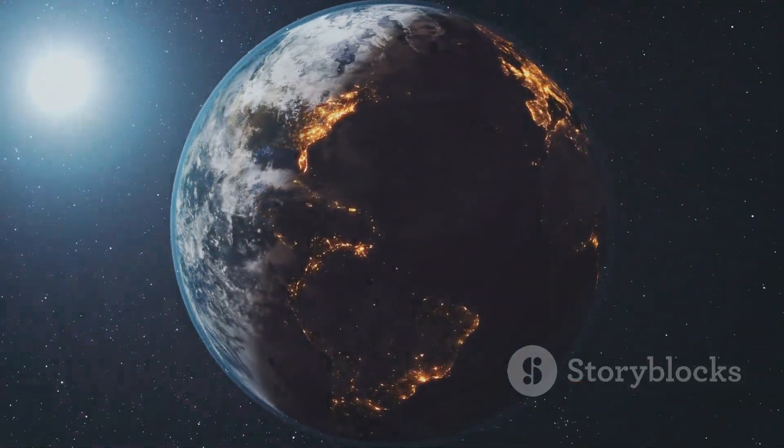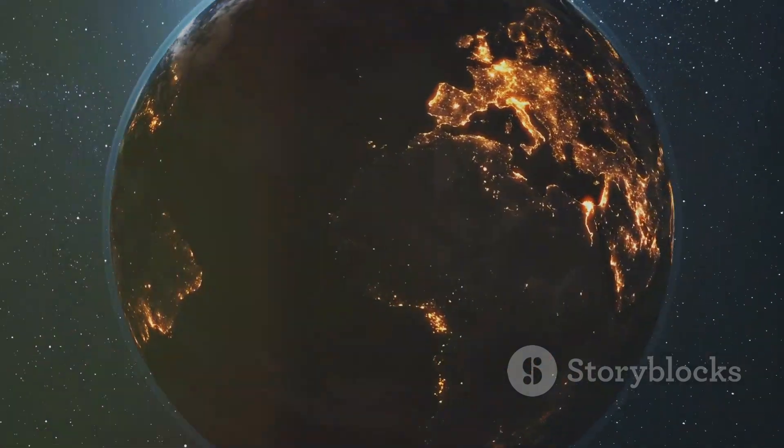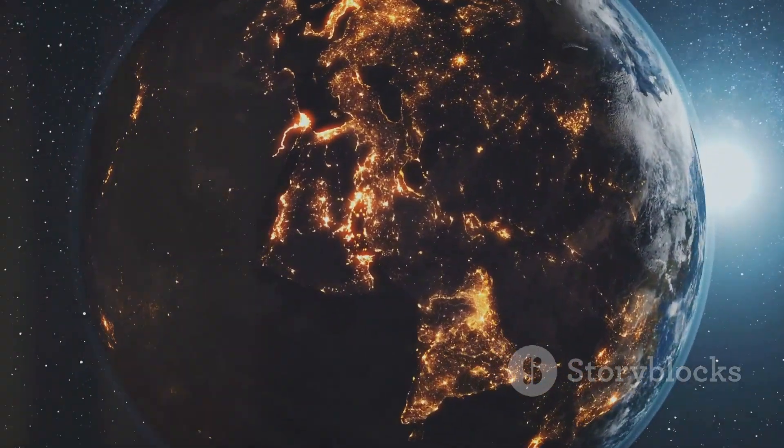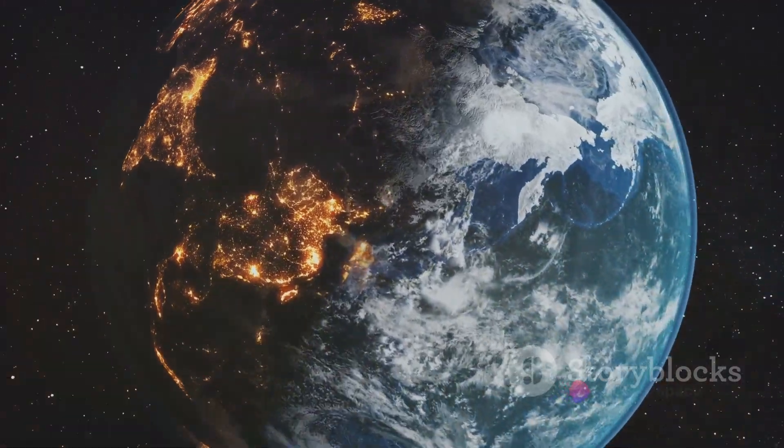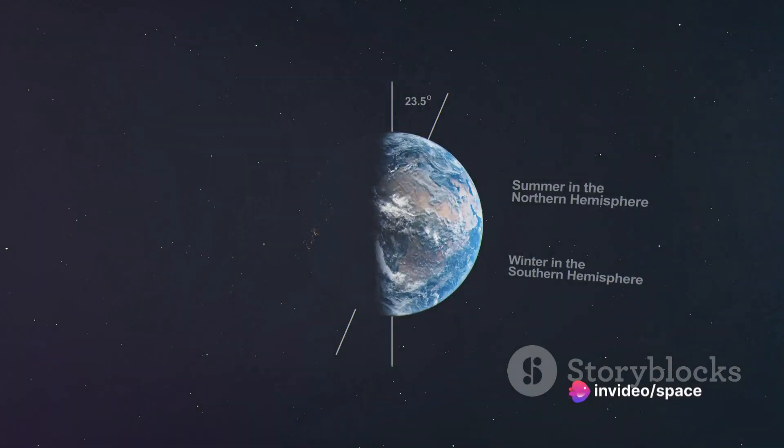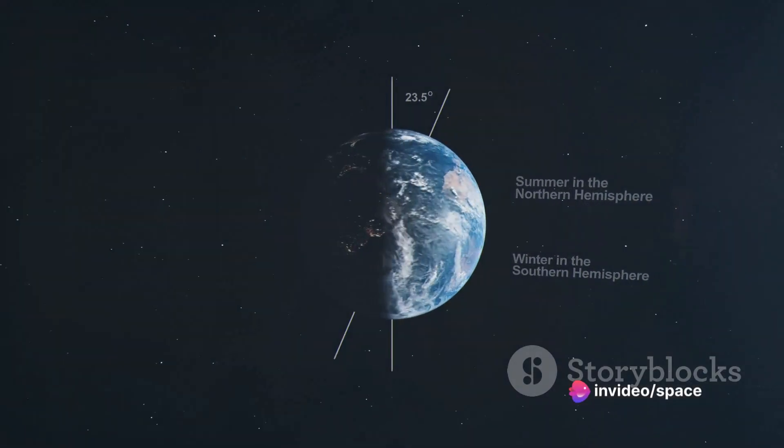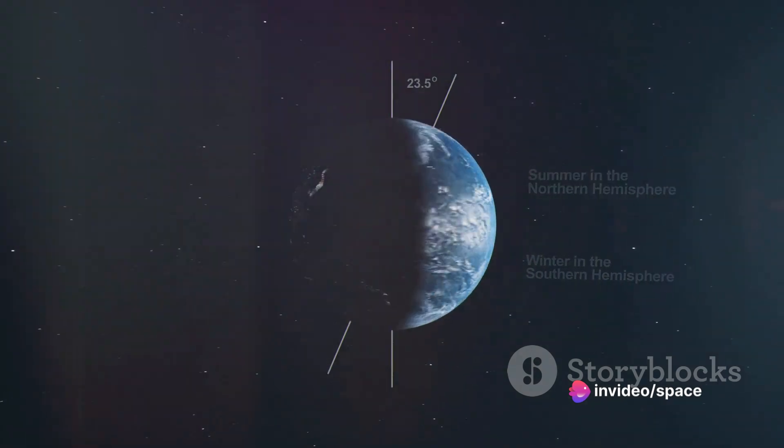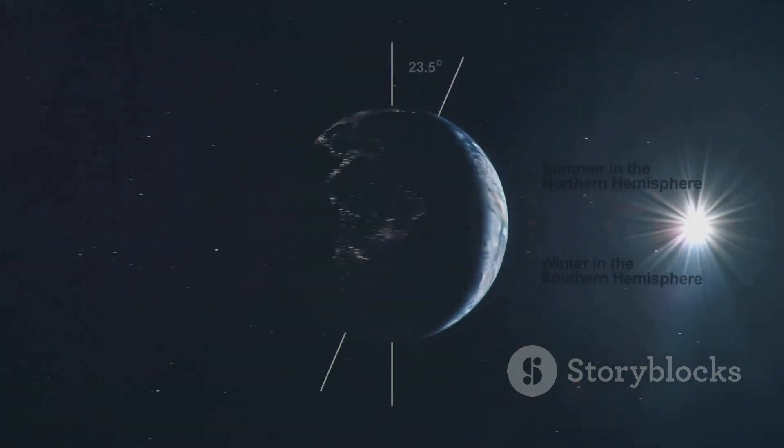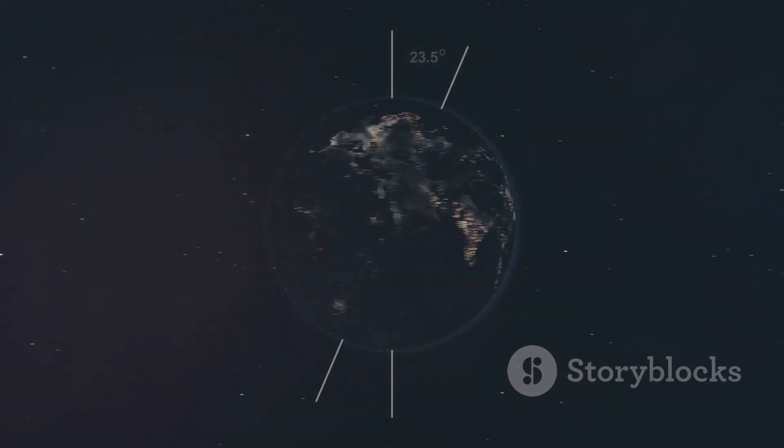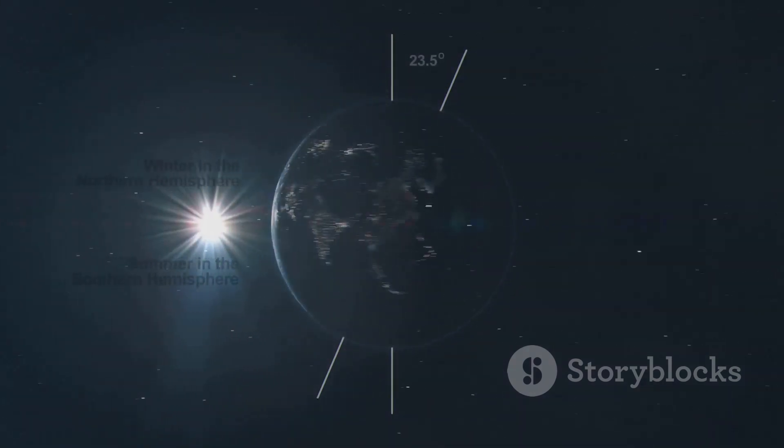Kepler-22b wasn't just any ordinary exoplanet, it held a special distinction. It was the first planet found to be orbiting in the habitable zone of a star similar to our sun. The habitable zone, sometimes called the Goldilocks zone, is that sweet spot where conditions might be just right, not too hot, not too cold, for liquid water to exist on the surface of a planet. And where there's water, there could potentially be life.